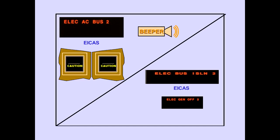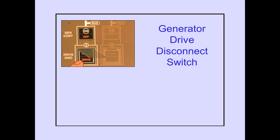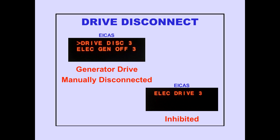When the ICAS caution message, Electrical AC Bus, is displayed, the ICAS advisory messages, Electrical Bus Isolation and Electrical Generator Off, are inhibited. The ICAS advisory message, Electrical Drive, is displayed if a drive unit has low oil pressure or high oil temperature; the generator drive light also illuminates. Pushing the generator drive disconnect switch disconnects the IDG from its engine; the drive light remains illuminated, and the generator off light illuminates. The ICAS advisory message, Drive Disconnect, is displayed when the generator drive is manually disconnected; the Electrical Generator Off message is also displayed, and the Electrical Drive advisory message is inhibited.